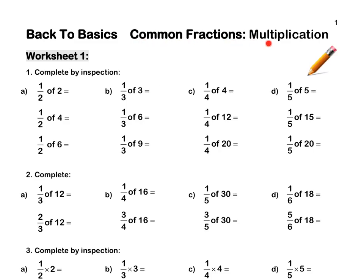Common Fractions Multiplication, Question 1. A half of 2 is 1, because 2 divided by 2 is 1. A half of 4 is 2, because 4 divided by 2 is 2.